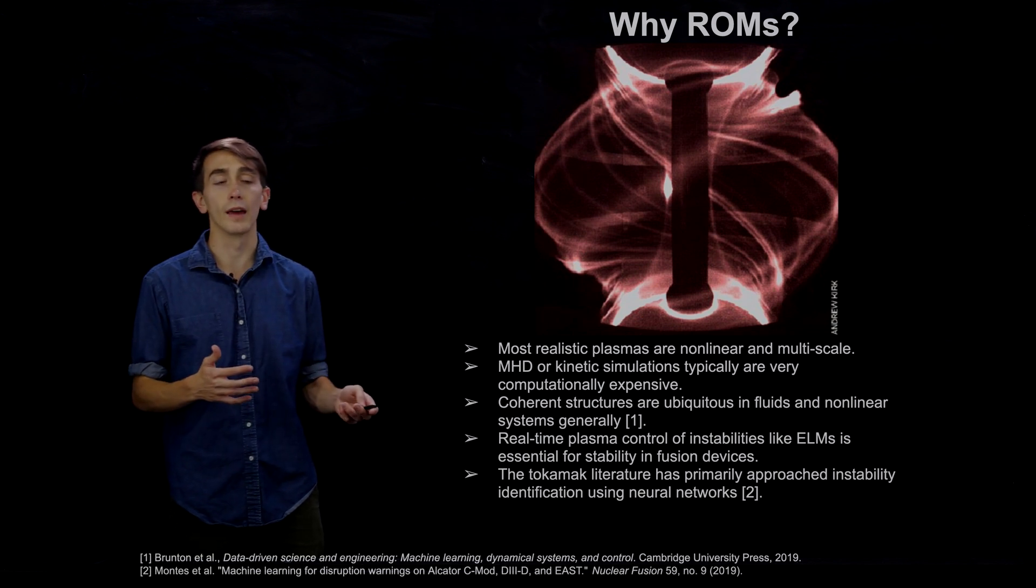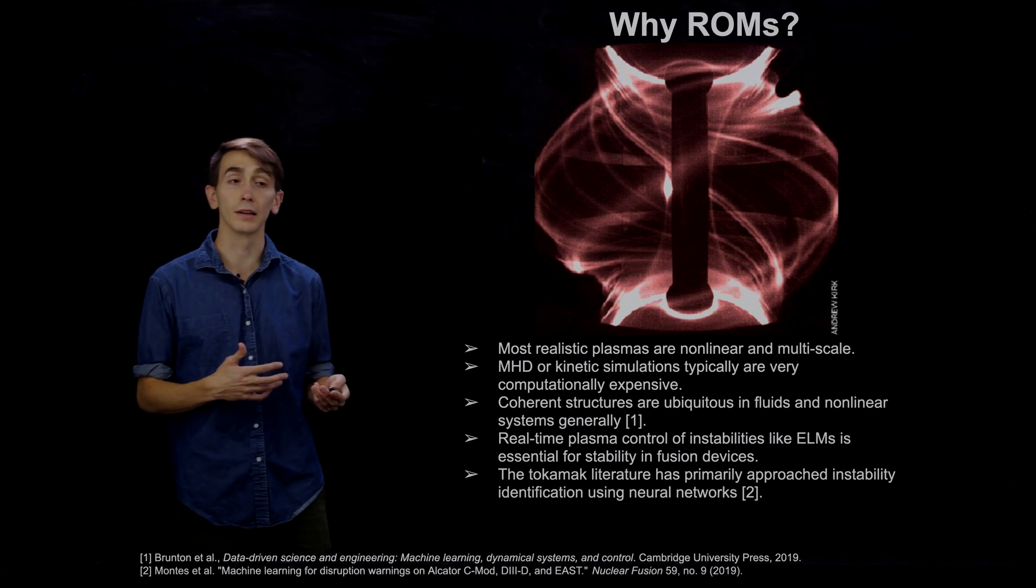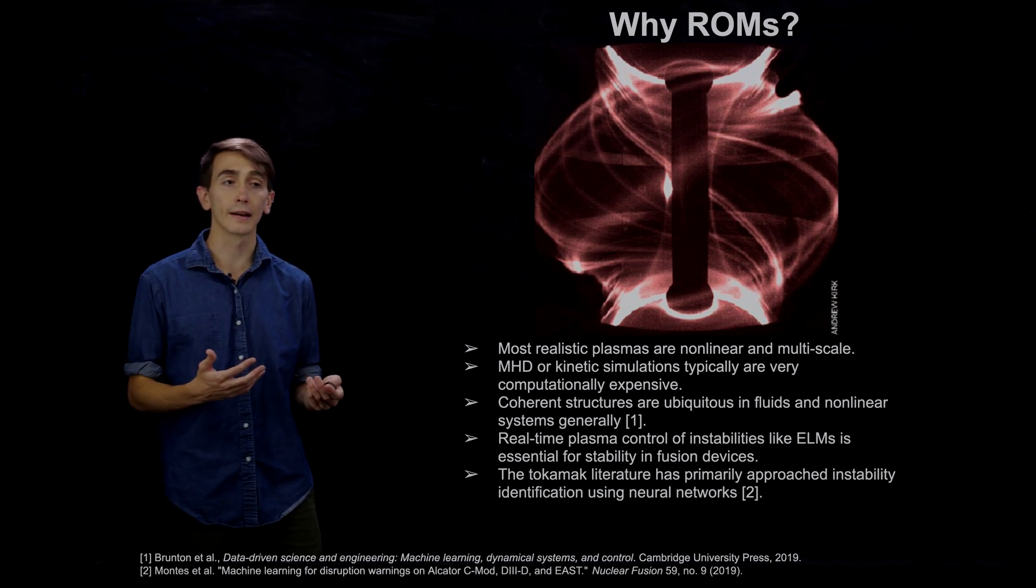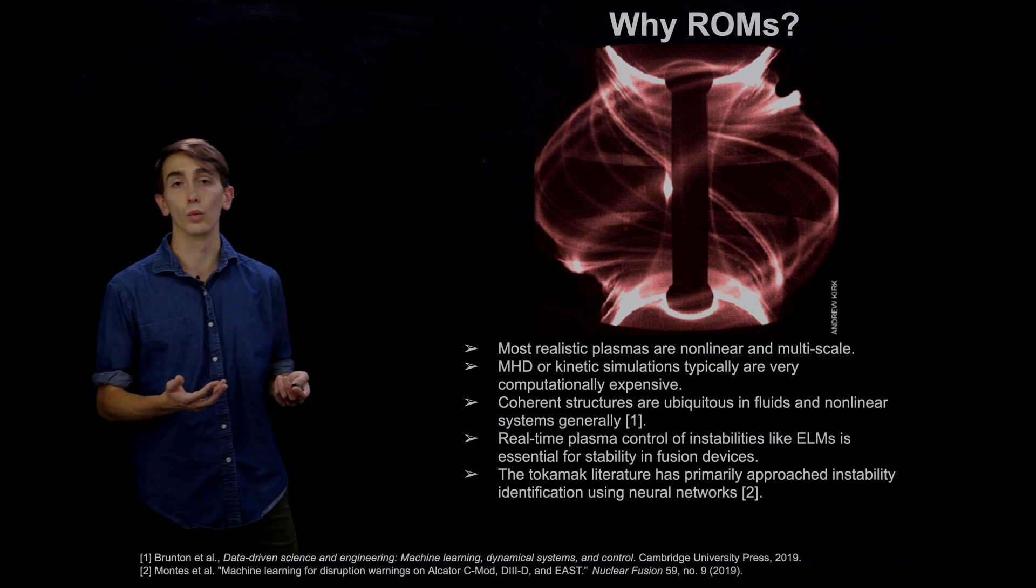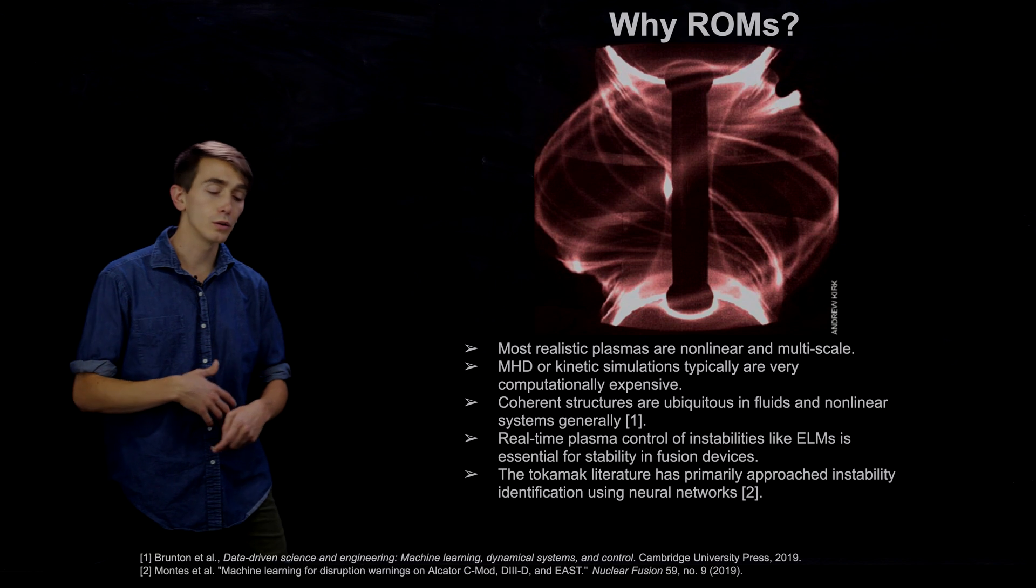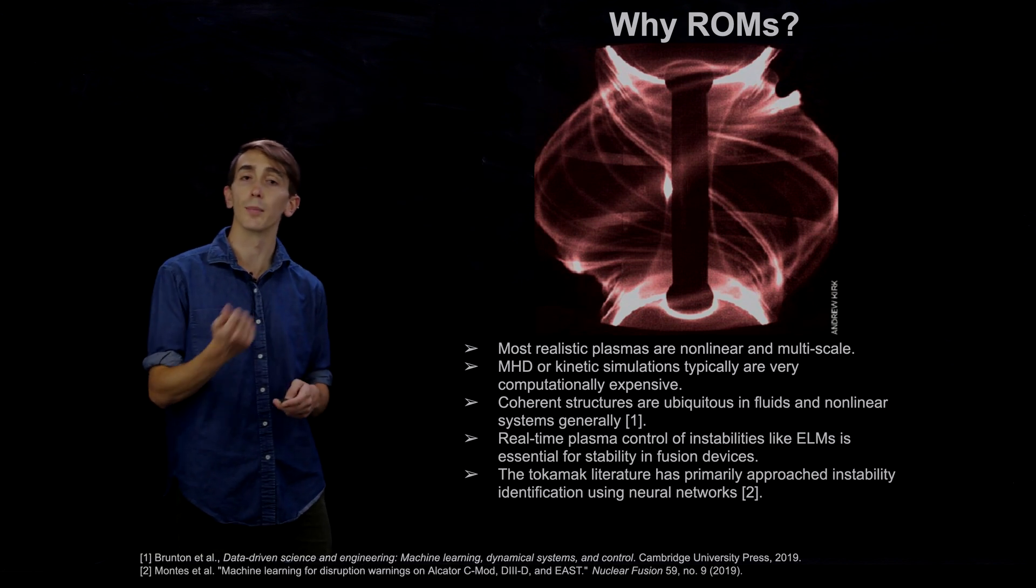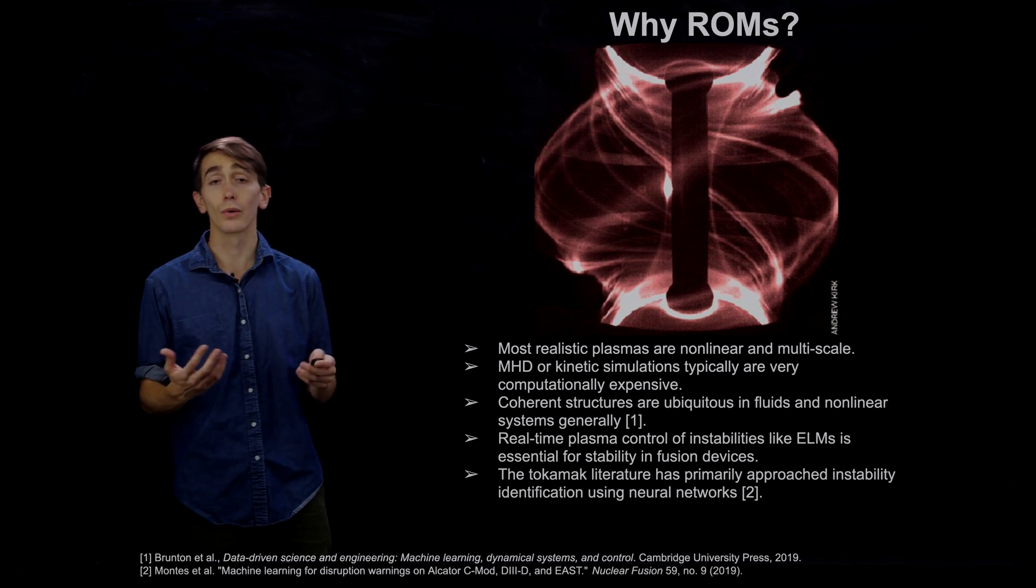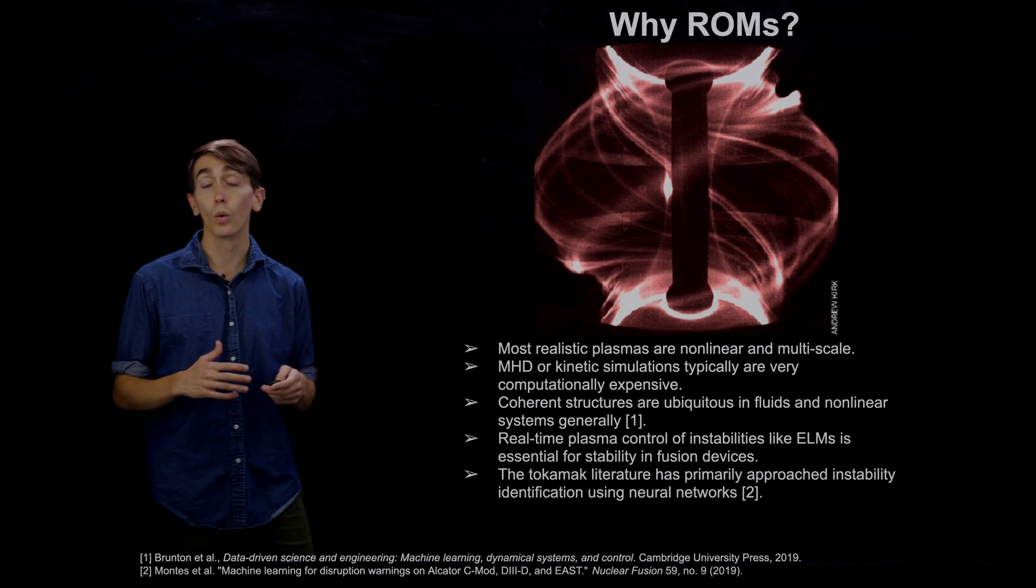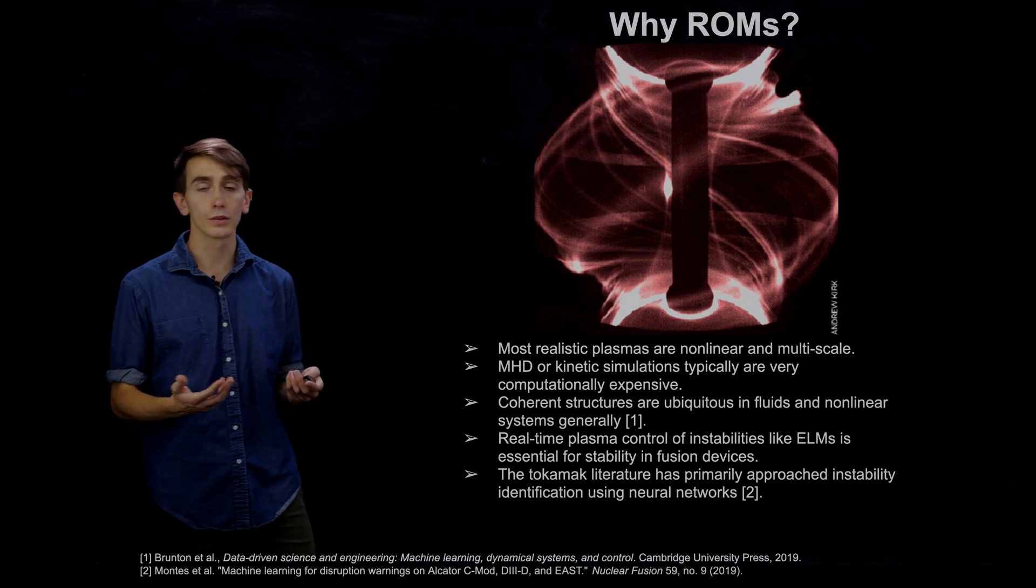I should mention before that the way this control of instabilities is typically looked at in the tokamak literature is that you typically do instability identification with neural networks. So what you do is you take 10,000 experimental discharges, you classify each one as big instability happened or it didn't, and then you train your neural network to identify a parameter space where instability is likely to happen.